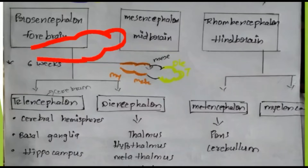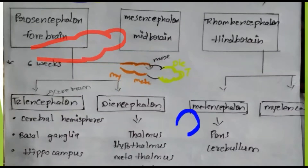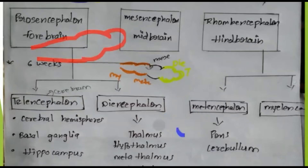After 6 weeks, the telencephalon becomes the cerebrum and related structures, and grows into the medulla oblongata and other parts. Telencephalon is represented by the cerebral hemispheres, basal ganglia, hippocampus, and the cerebrum. After 6 weeks, telencephalon develops into the cerebrum.